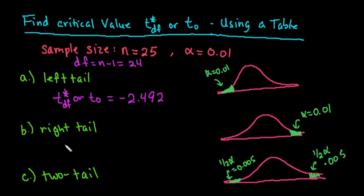The right tail, our t-naught or t-star, however it's notated in your textbook, would be positive 2.492.